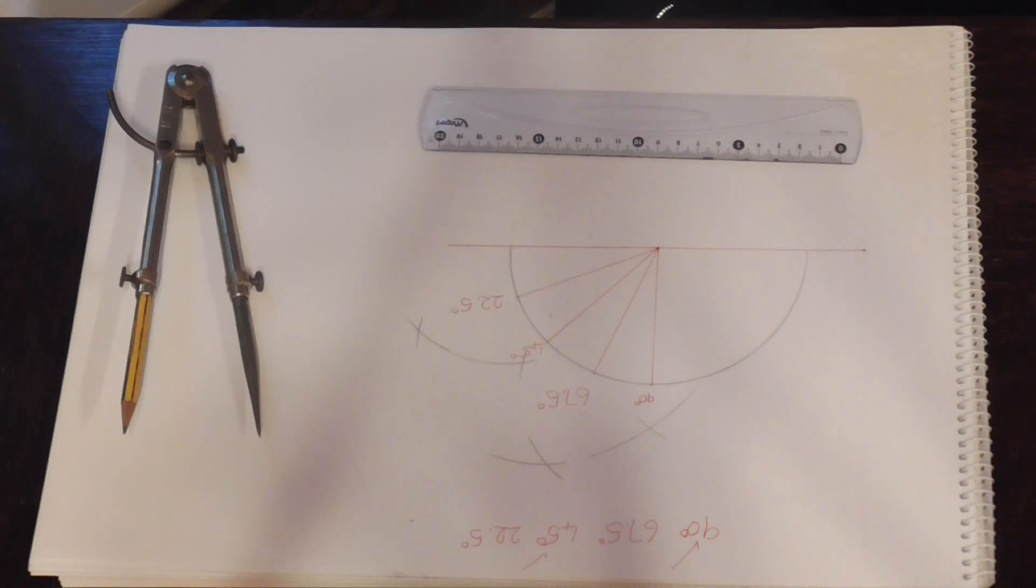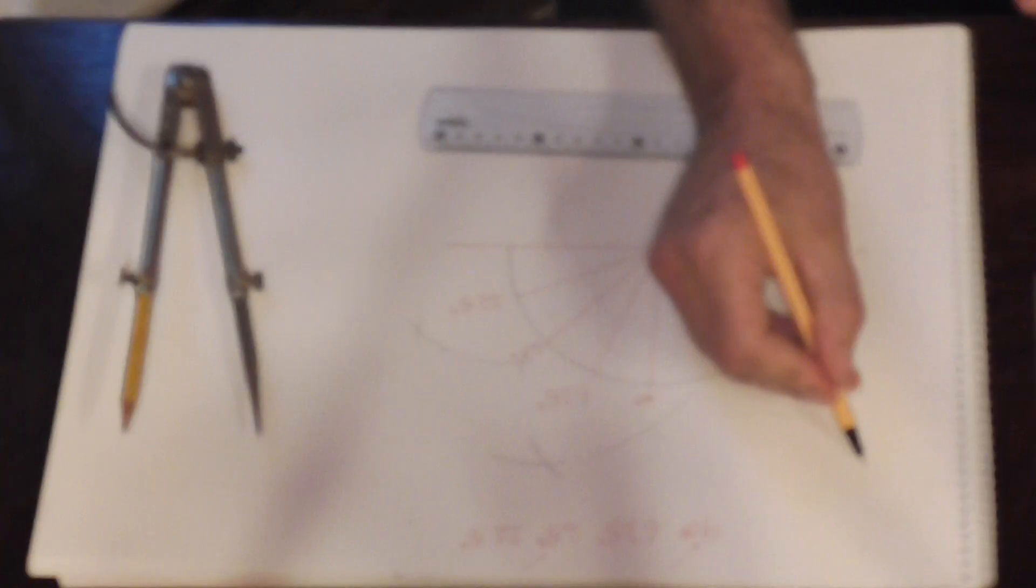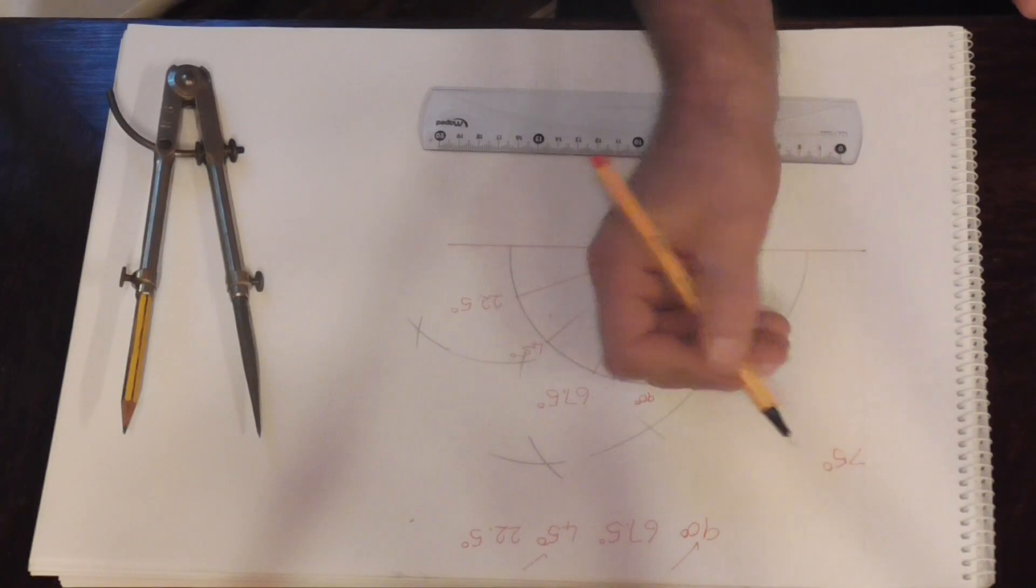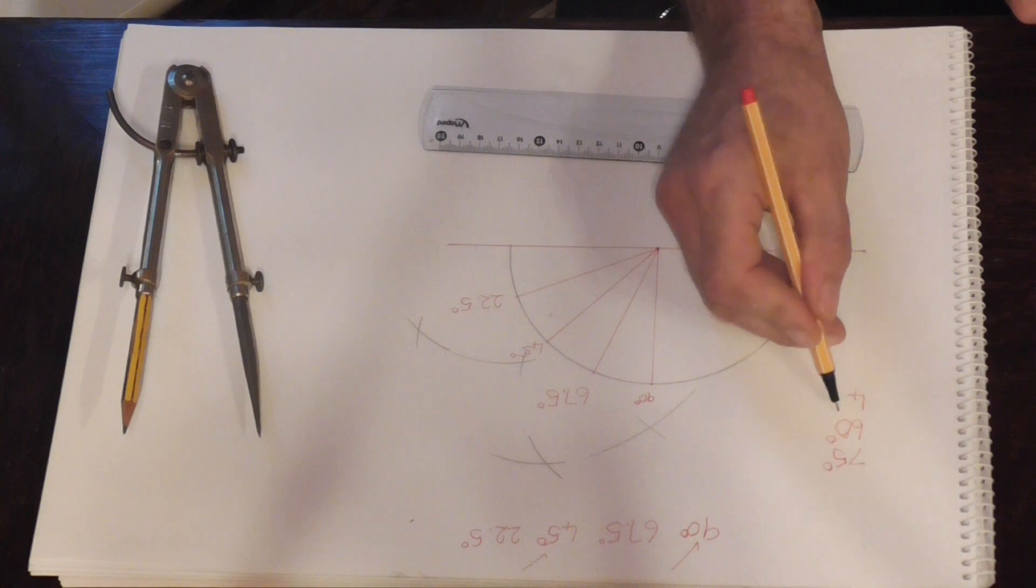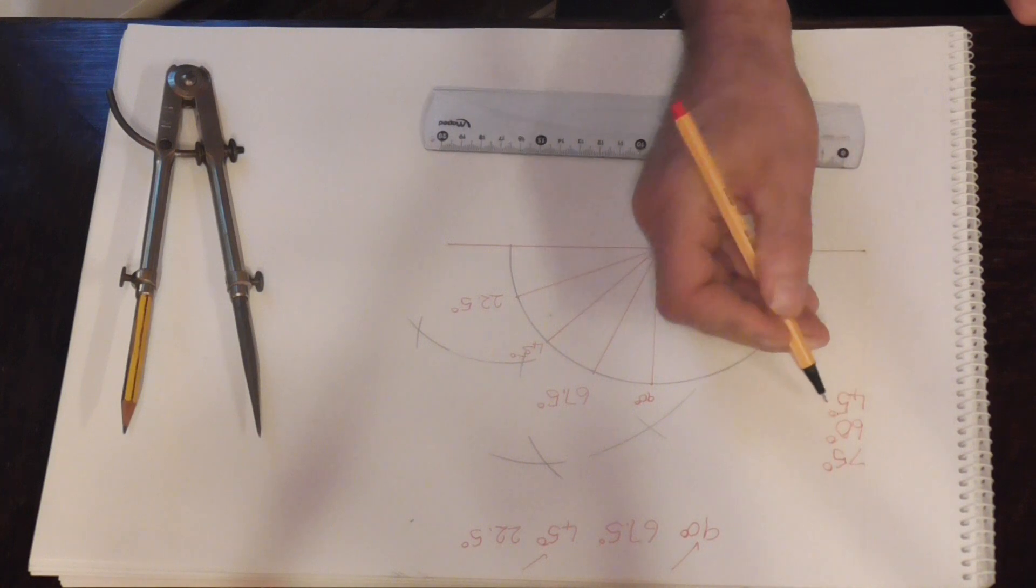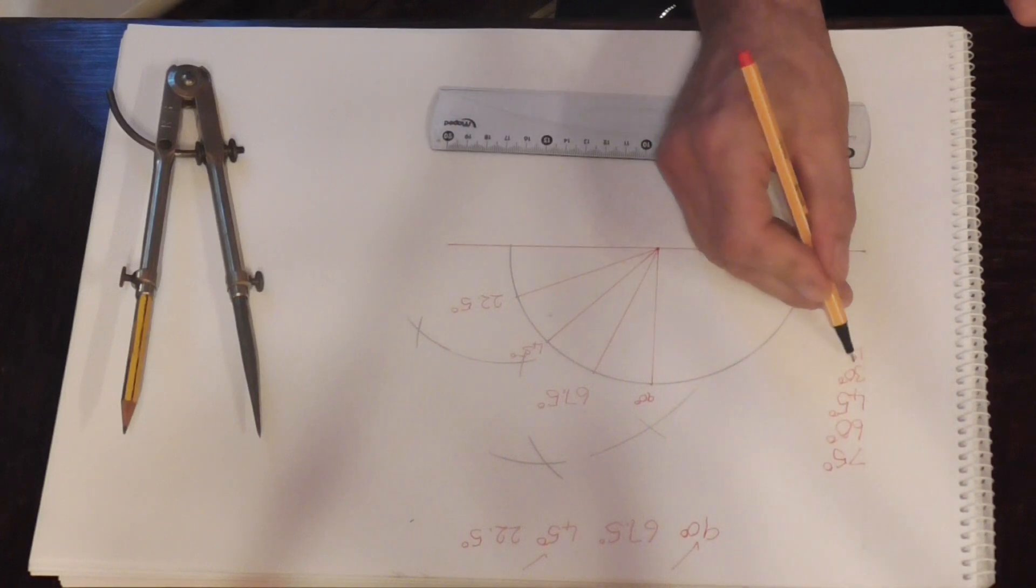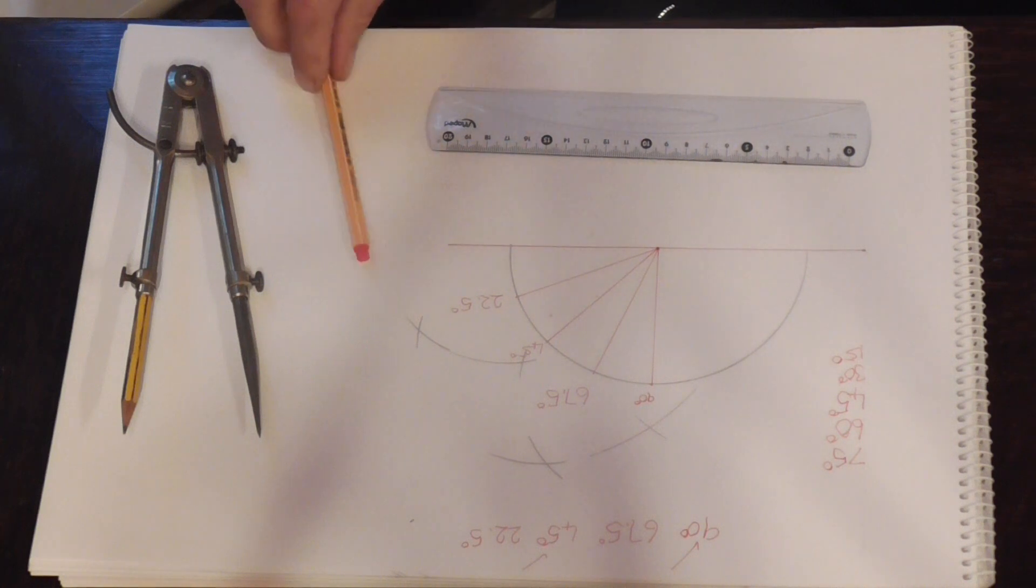Now on this side we are going to construct angles. 75 degrees, 60 degrees, 45 degrees, 30 degrees, and 15 degrees. So let's get started.